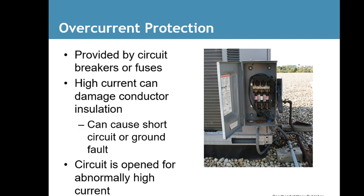High current can damage indoor conductors or insulation, causing short or ground fault circuits and abnormally high current. Things like power surges and lightning strikes can also cause damage. In Alabama, where I had my business for 10 years, lightning strikes were very common. If power lines near your house get hit by lightning, it can transfer to the unit and blow out the side of the compressor — putting a hole in it the size of a silver dollar. These are very important protection devices.